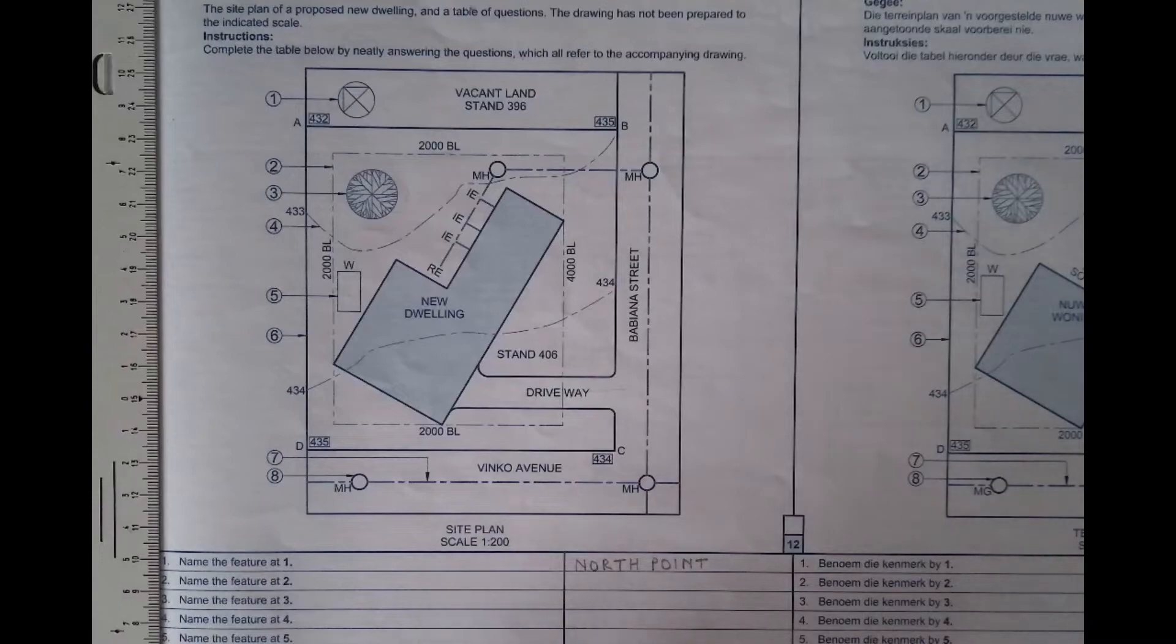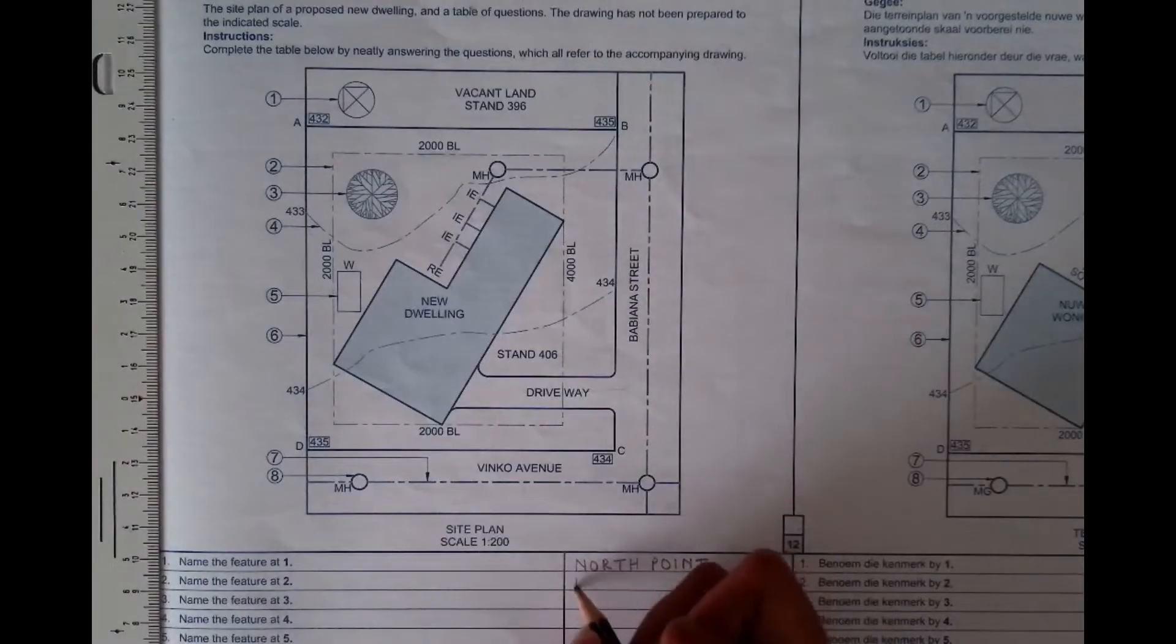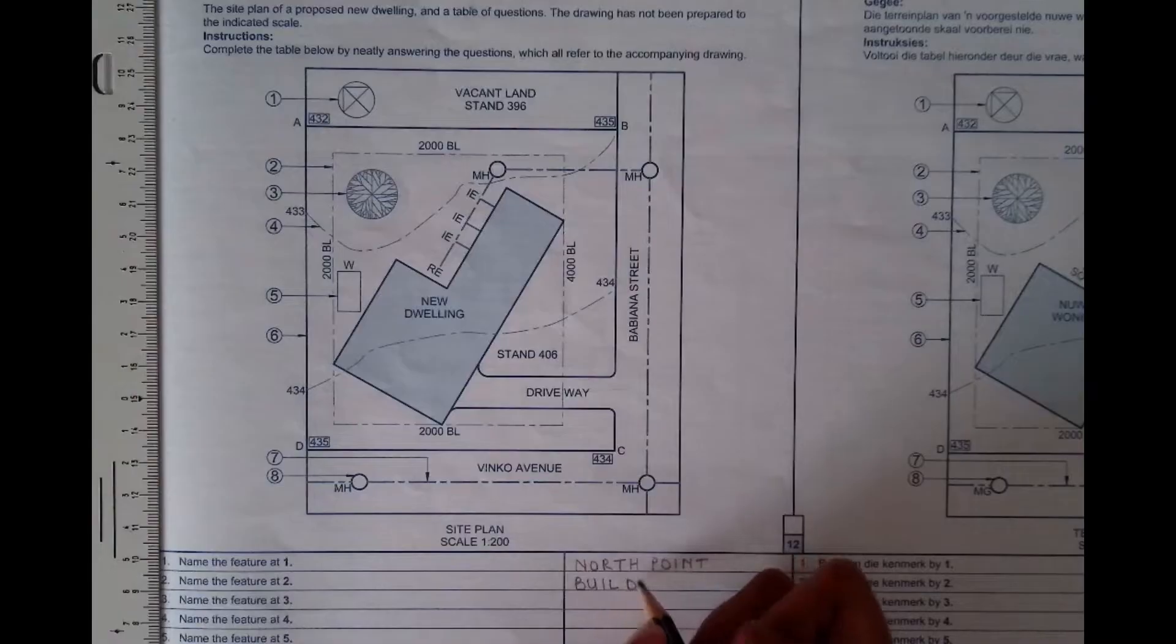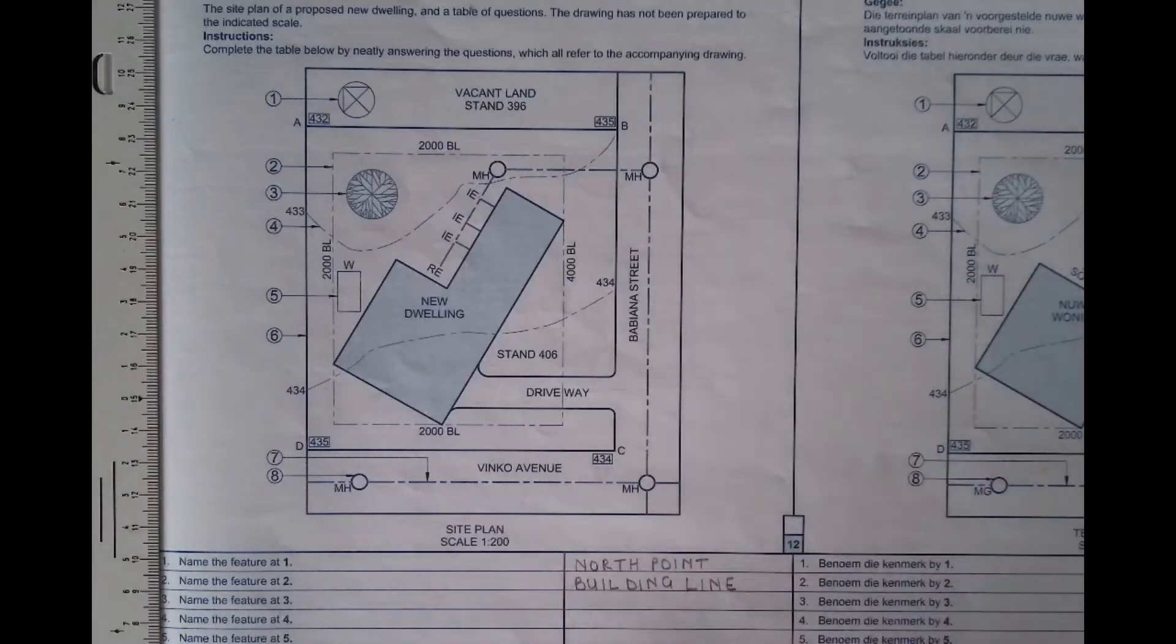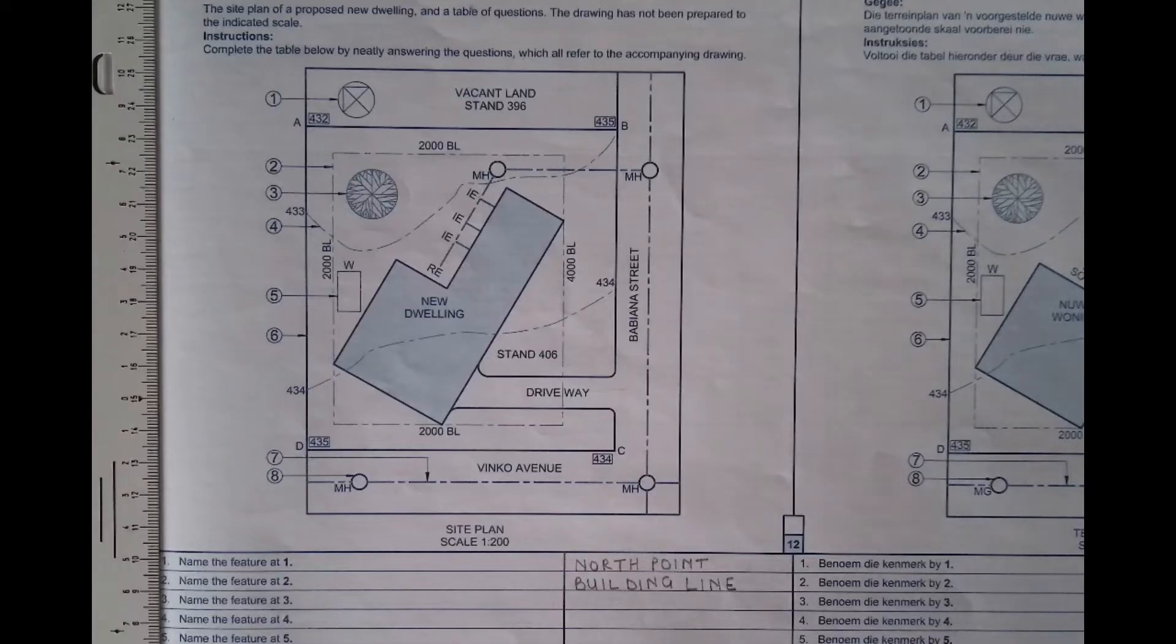And then name feature at two. This feature at two is what we call the building line. As you can see on this picture attached, a building line is a line that's like a limit. It's a limit beyond which a house must not extend into. So it's a line that is there and your building must not go over it. So that is basically what the building line is for. It's a limit in which a house must not go over.